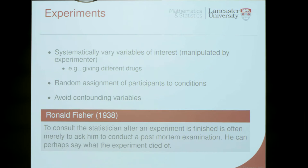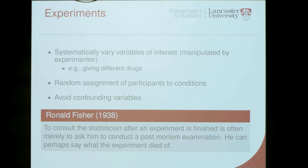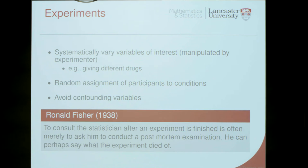So what am I talking about? Talking about experiments in general, which is where we systematically vary some variable of interest — for example, giving different drugs, giving different doses of drugs — and see what the implications are for an outcome of interest. Typically, good practice is random assignment between treatments in order to avoid confounding variables.